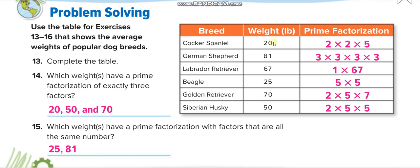Here they already solved the prime factorization of all these numbers. You can do it the same way we solved the previous questions. They are saying which ways have a prime factorization of exactly three factors. These are the factors, count them. Which one have three? 1, 2, 3, so 20. Now 4, there are two. Here 1, 2, 3, so 70. And 1, 2, 3, so 50. 20, 50, and 70.